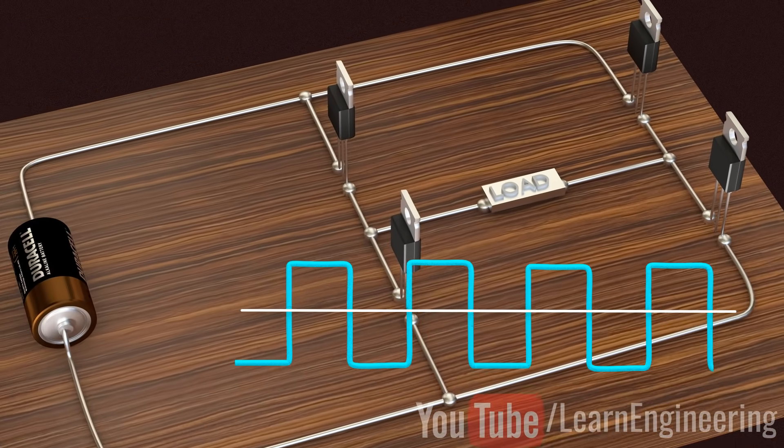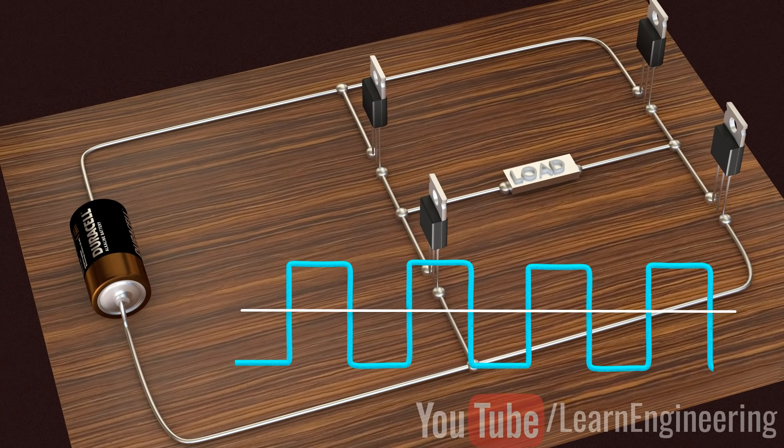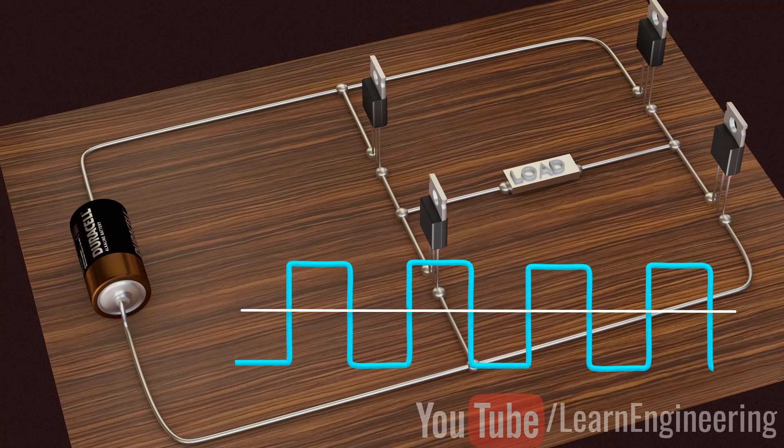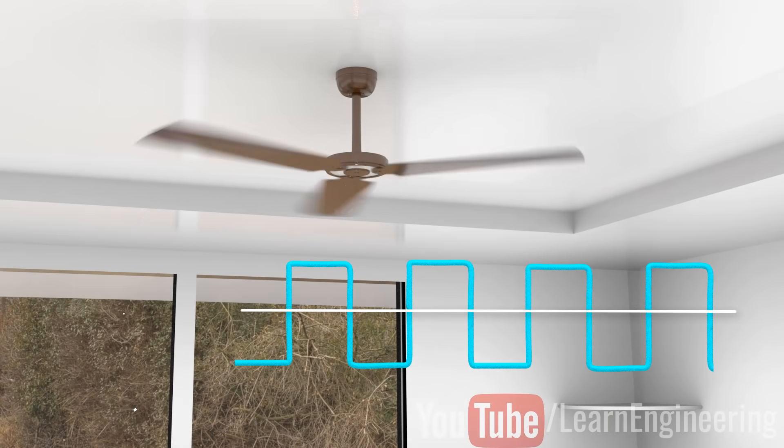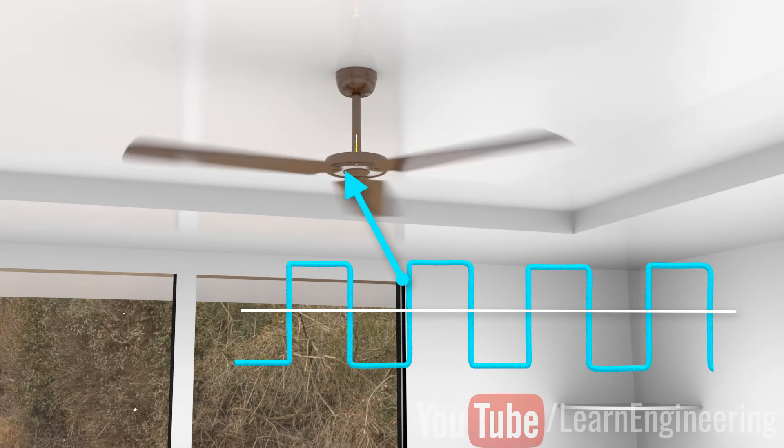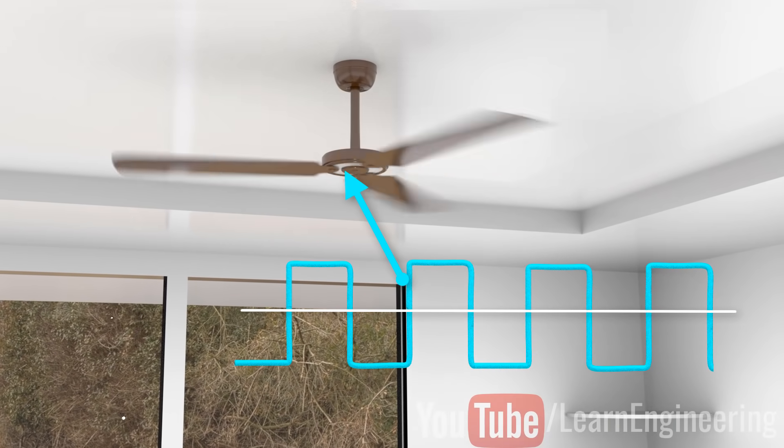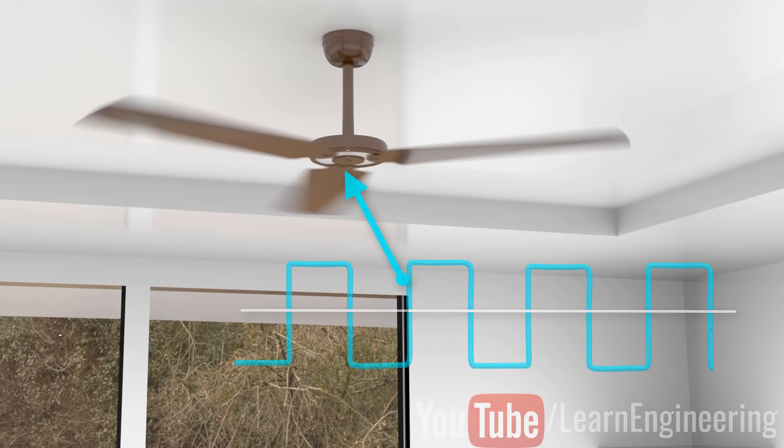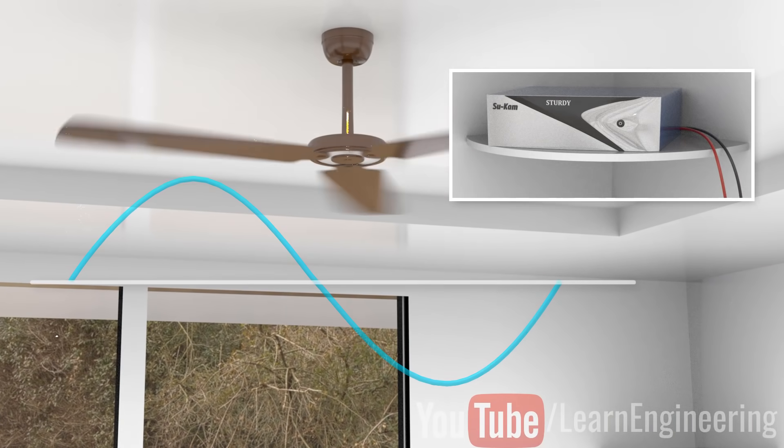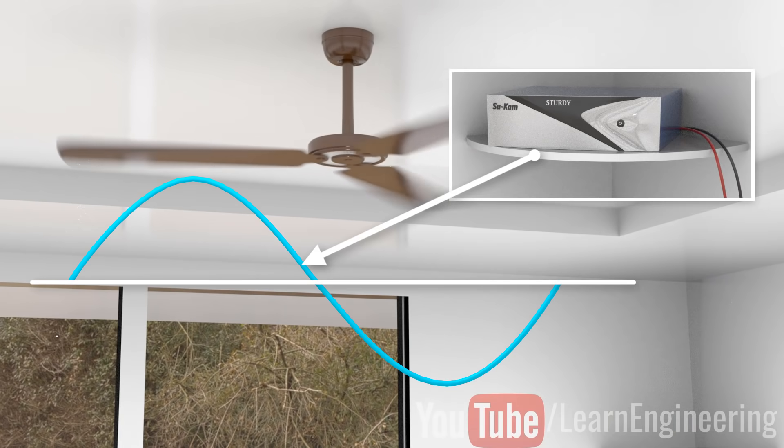The square wave output is a high approximation of sine wave output. Old inverters used to produce them. That's why you hear a humming noise when you run your electric fan or other appliances using square wave power. They also heat up electric equipment. Modern inverters produce pure sinusoidal output. Let's see how they achieve it.